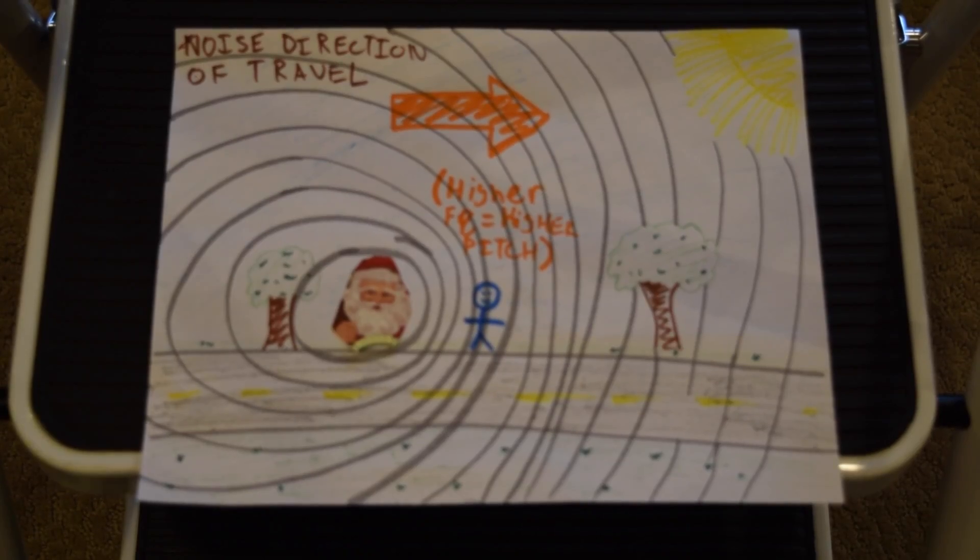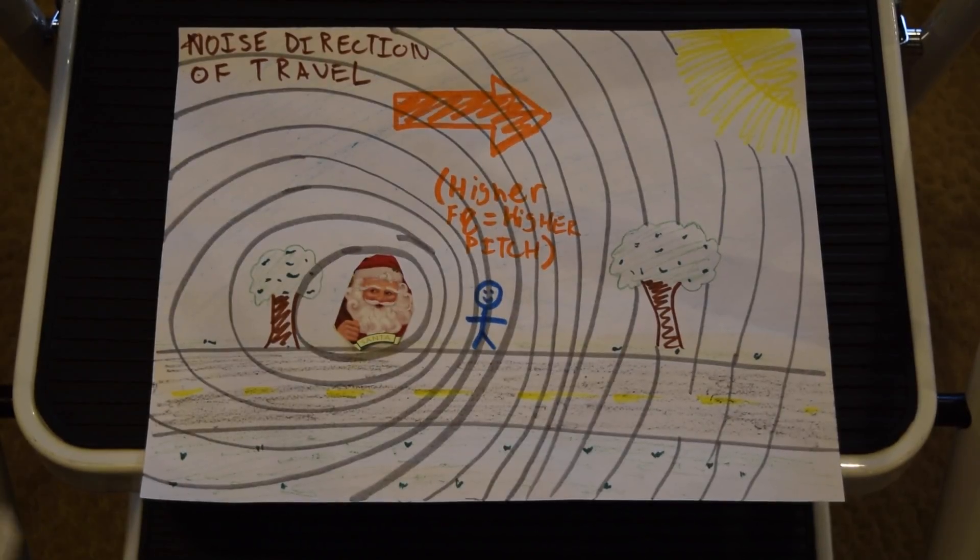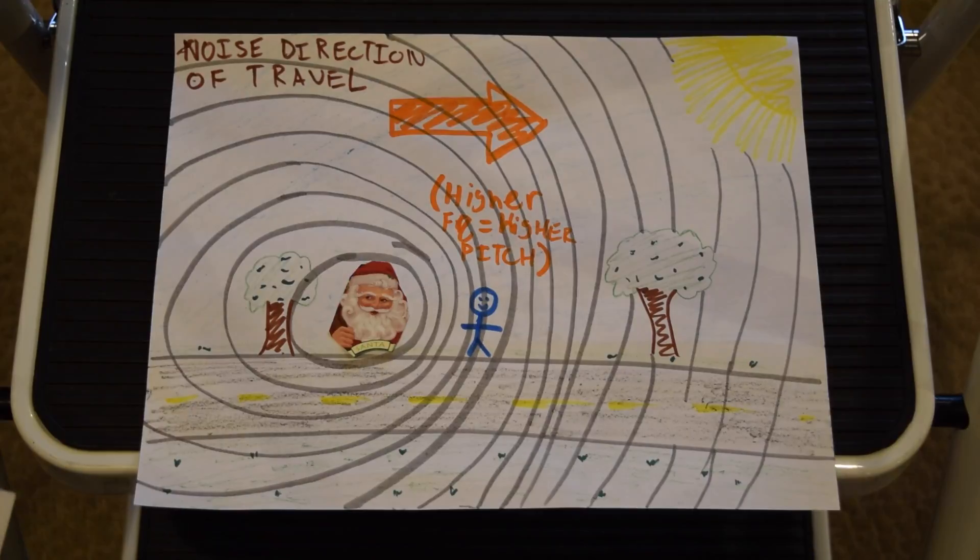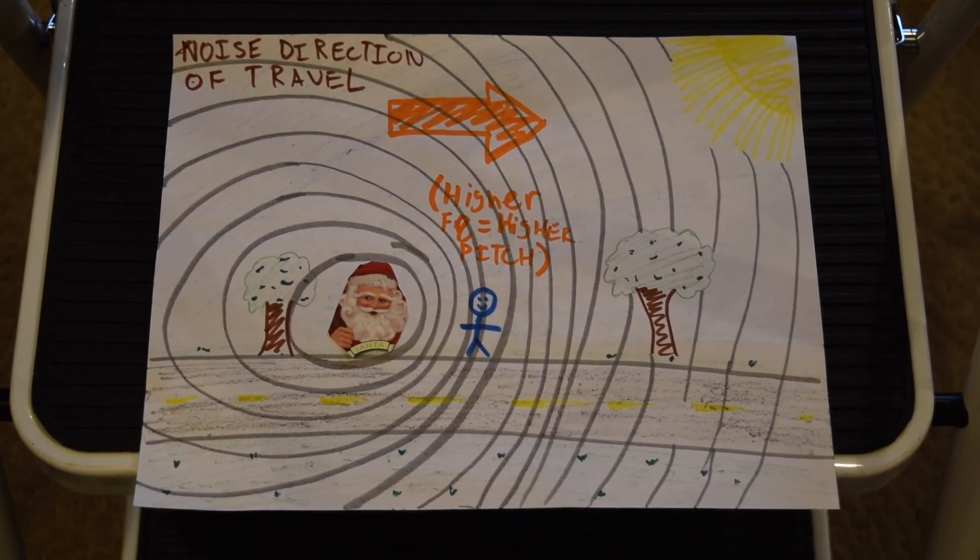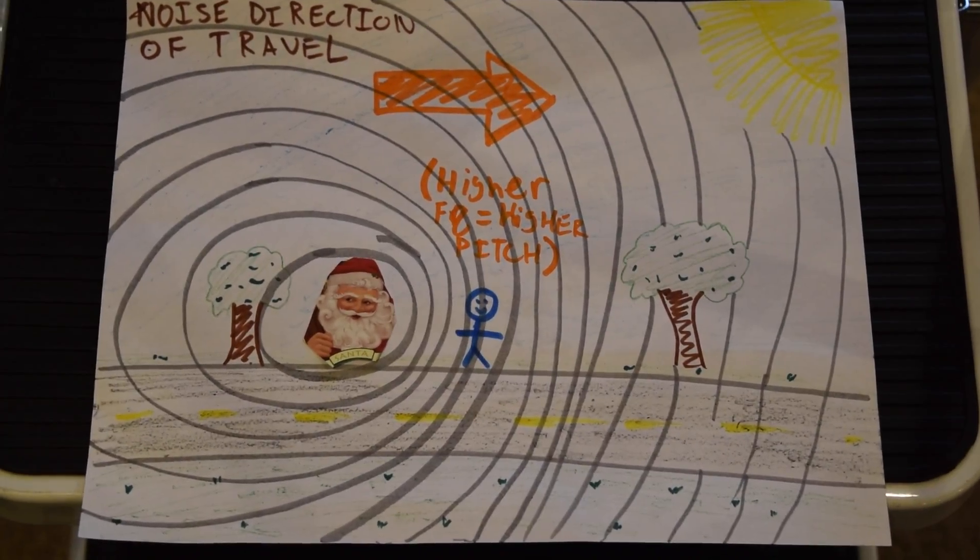So this is an explanation of the Doppler effect. Suppose that you are standing on the side of the road, this is you, and Santa thinks that you are too close to the road and blares his horn. Other than being annoyed, you experience the Doppler effect as the car drives by.